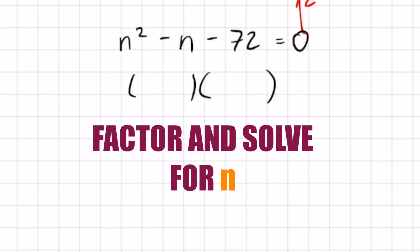Factor that out. That one's pretty easy. You get (n + 8)(n - 9) = 0.